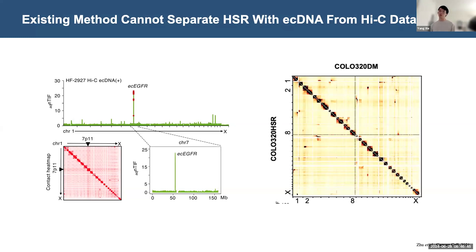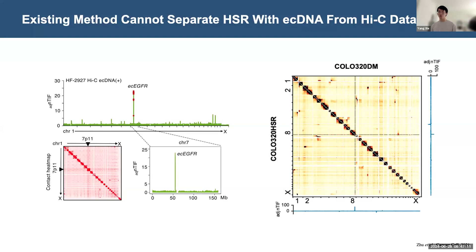To start studying structural variation at the single-cell level, I performed Droplet Hi-C on two colorectal cancer cell lines, which both carry a highly amplified region from a chromosome containing the MYC gene, either as HSR or as ecDNA respectively. From the contact map, you can see that at the same region, these two cell lines show very similar genome-wide interaction patterns. If we calculate the copy-number-normalized trans-interaction frequency as shown in a previous paper, both the DM and HSR cell lines have a very high score.